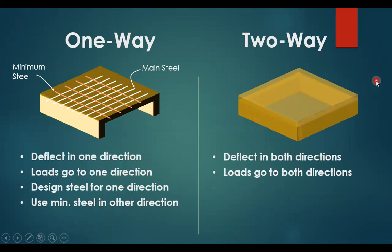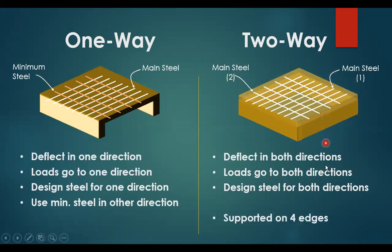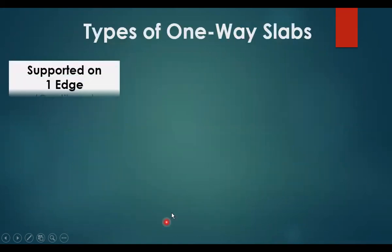However, for two-way slabs you have to design for both directions. The main steel in the short direction — we call it main steel one — will be at the bottom layer. Above this layer you will have main steel, which we call main steel two. All two-way slabs should be supported on four edges, however one-way slabs could be supported on one edge, two, or four edges as we can see.